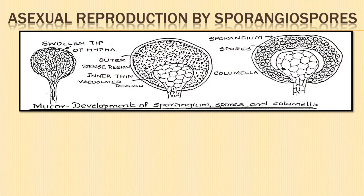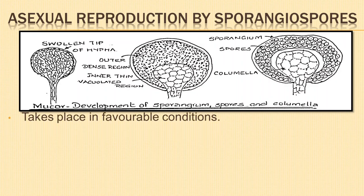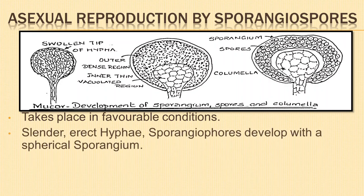We shall now look into asexual reproduction by sporangiospores. This method of reproduction takes place under favourable conditions of moisture and temperature. Numerous slender erect hyphae called sporangiophores develop, each ending in a spherical or knob-like structure called a sporangium.